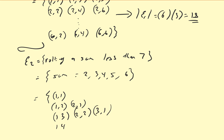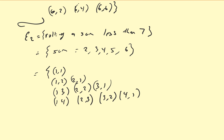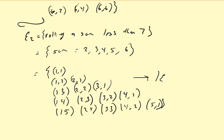To get 5: 1-4, 2-3, 3-2, 4-1. And to get 6: 1-5, 2-4, 3-3, 4-2, 5-1. So the size of E2 is going to be 1 plus 2 plus 3 plus 4 plus 5. That's going to be 1 plus 2 is 3, plus 3 is 6, plus 4 is 10, plus 5 is 15.